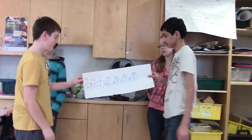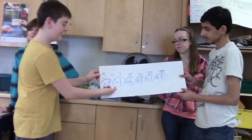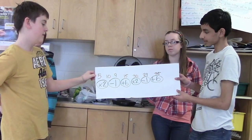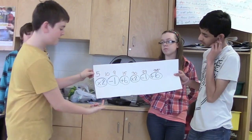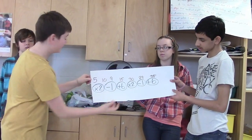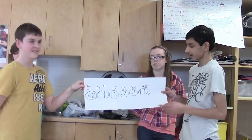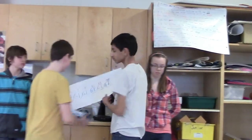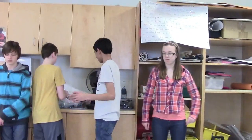And last group. Our pattern is 5, 10, 9, 15, 30, 29, 35. We got this by multiplying by 2, adding 1, subtracting 1, adding 6 — and repeat. 5, 6, 7, 8.